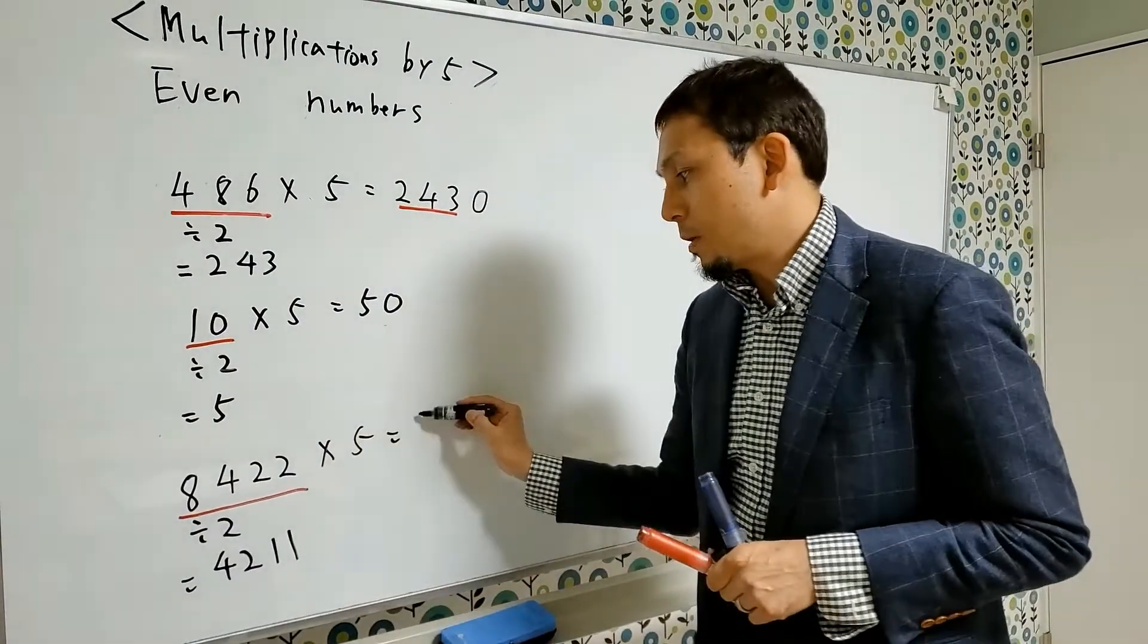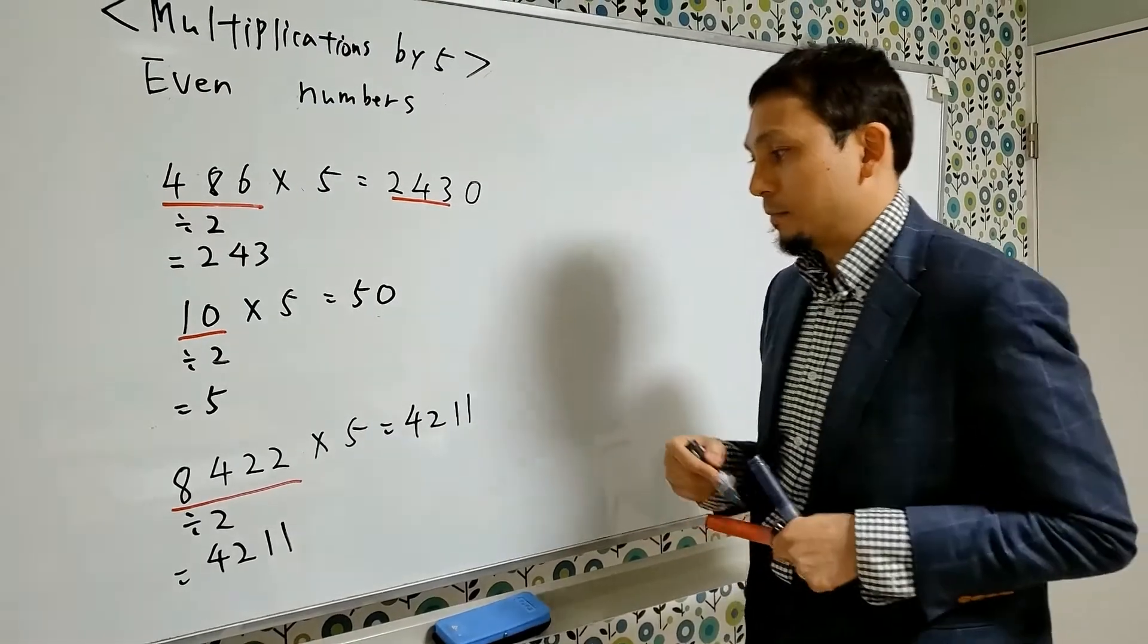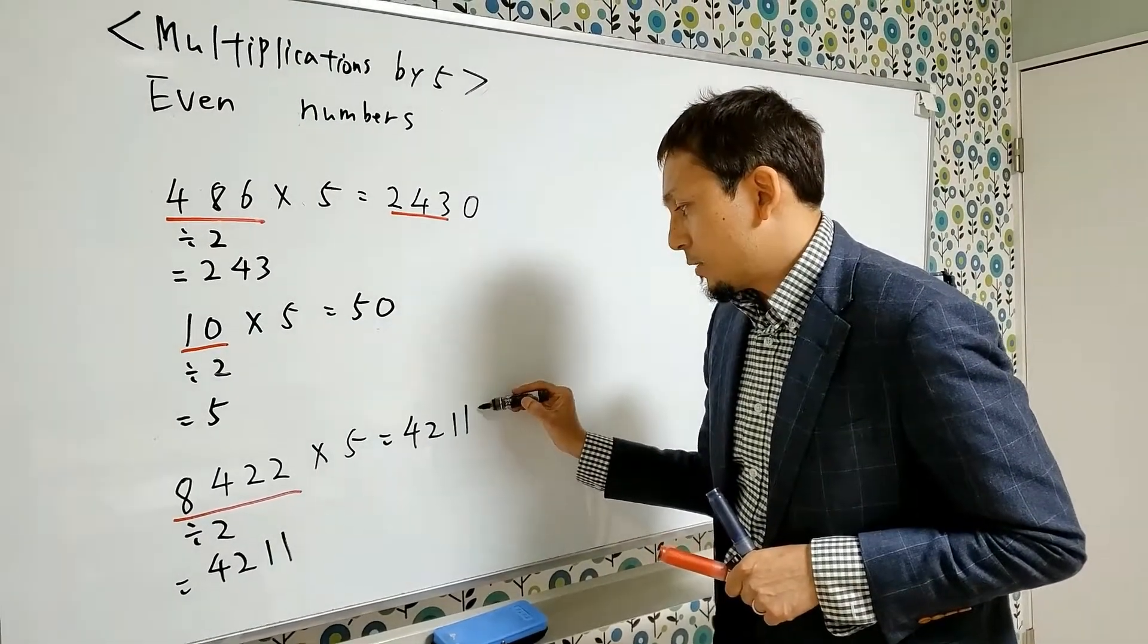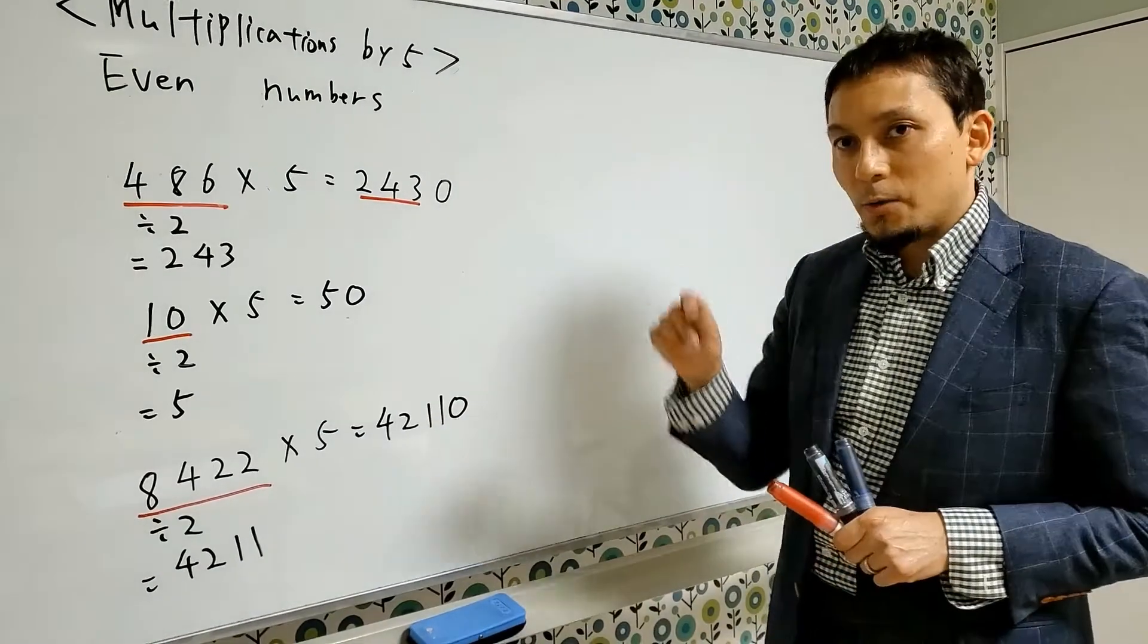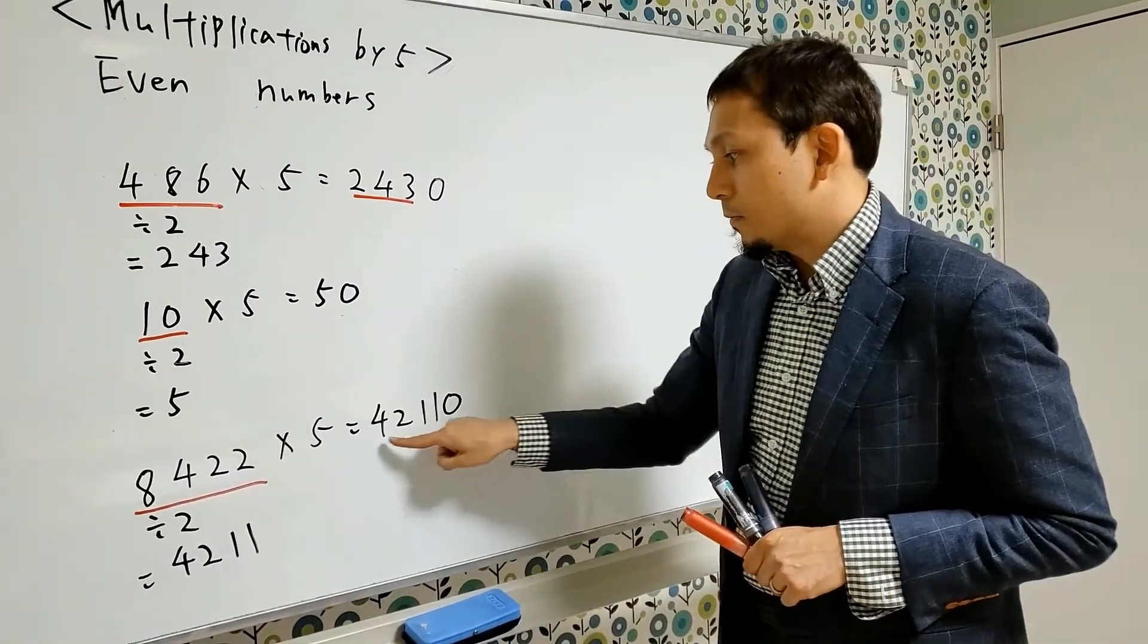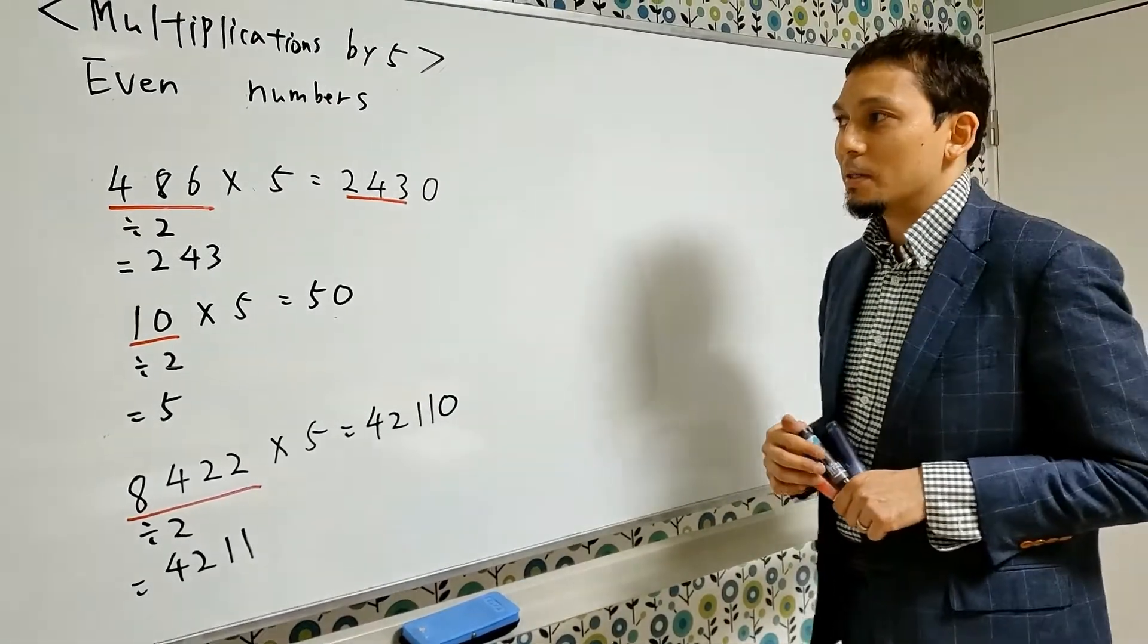So write the number 4211 here. After that, all you have to do is just write the number 0 here. Now you get the right answer: 42,110. Don't you think it's amazing?